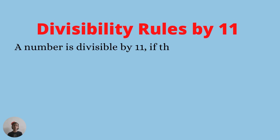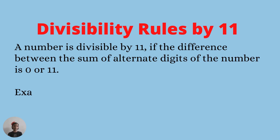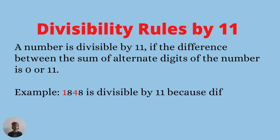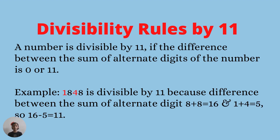Divisibility rule of eleven: a number is divisible by eleven if the difference between the sum of alternate digits of the number is zero, five, or eleven. Alternate means to take one number and skip the next. Example: one thousand eight hundred and forty-eight — the sum of alternate digits eight plus eight is sixteen, and one plus four is five, so sixteen minus five equals eleven.